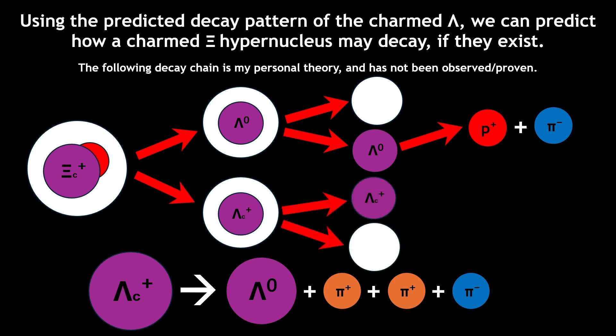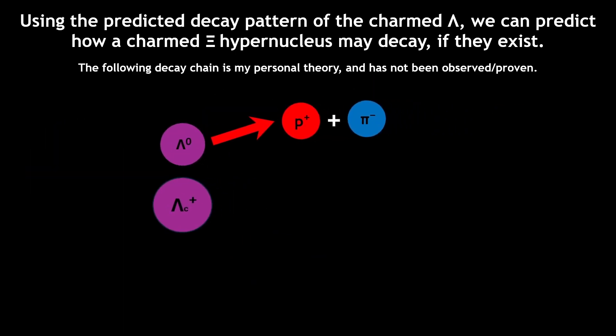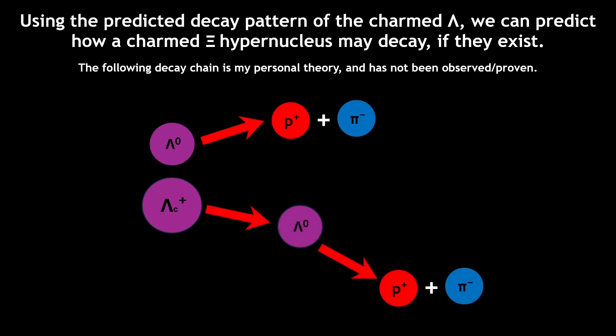The lambda baryon would likely decay into a proton and a negatively charged pion. And the charmed lambda baryon may follow the theoretical decay chain, producing a lambda baryon, which likely decays, two positive pions, and one negative pion.